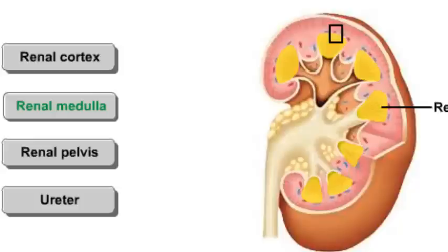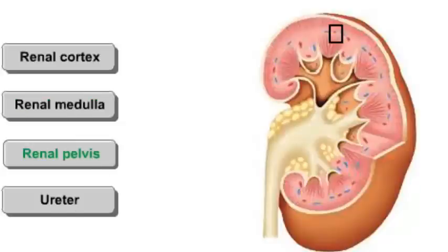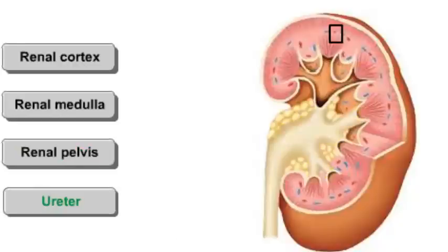This region appears striated because collecting ducts from those nephrons are running through this region and finally take entry into the renal pelvis, which is the third structural area. It's a central cavity where urine formed in the renal cortex and medulla collects. Finally, the ureter is a smooth muscle-walled duct that carries the urine from the kidney to the urinary bladder.